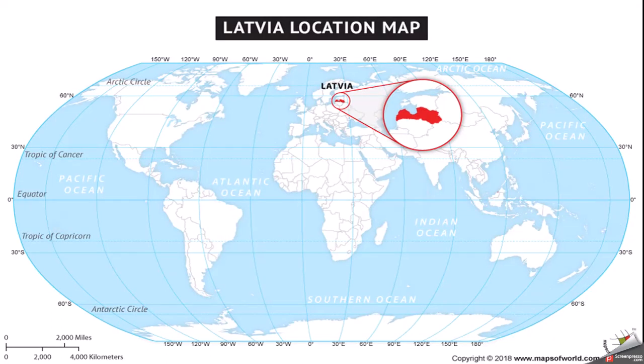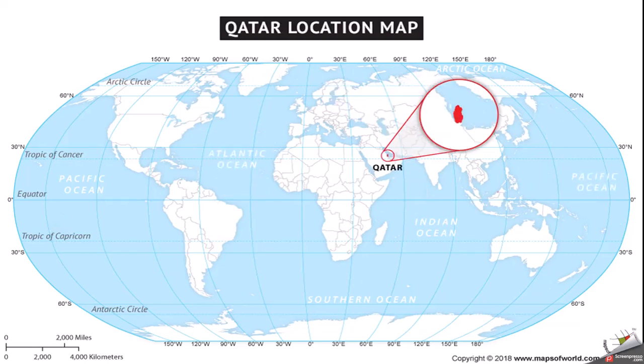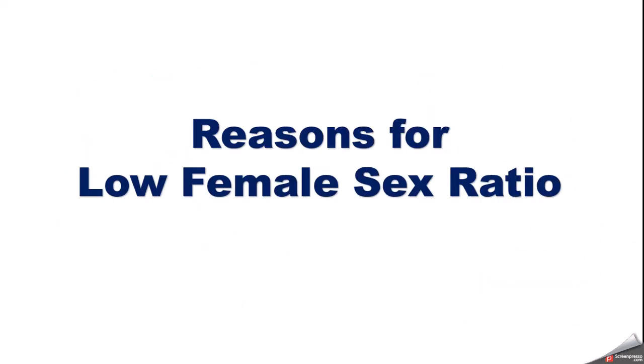लैटविया एक छोटा सा देश है यूरोप में — उसका location आप mind में set कर लीजिए। और इसके बाद Qatar — यह Middle East में एक state है, Saudi Arabia के पास। इन दोनों देशों का location आप अपने mind में रख सकते हैं।